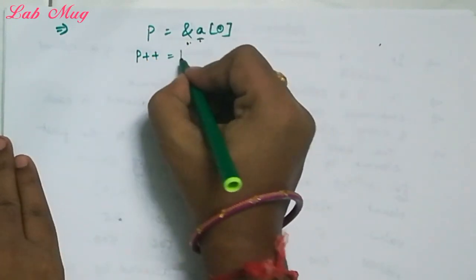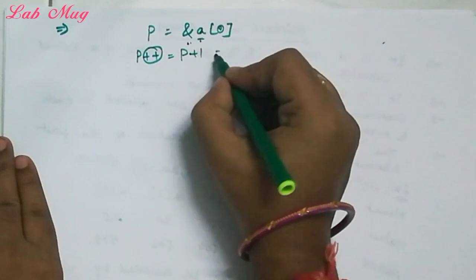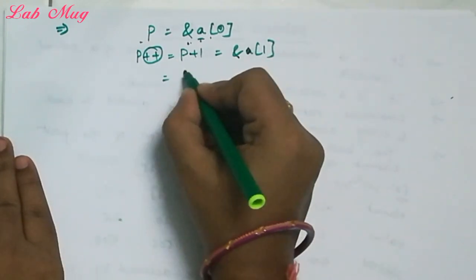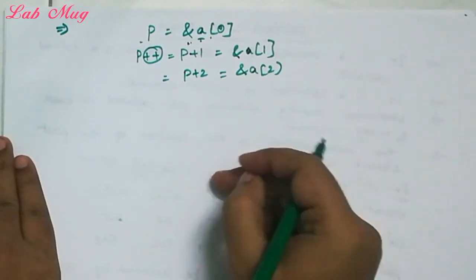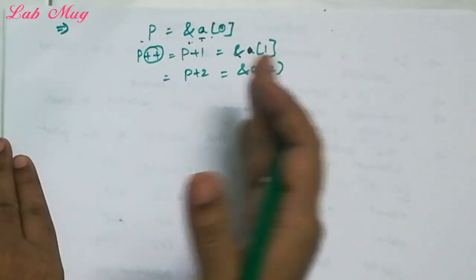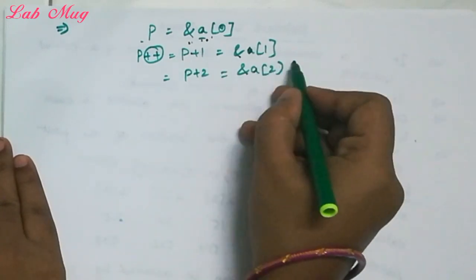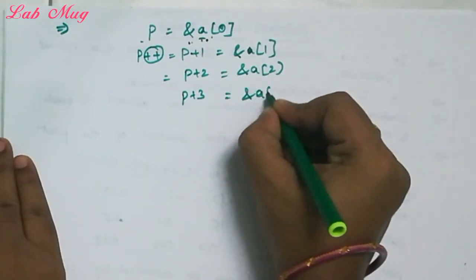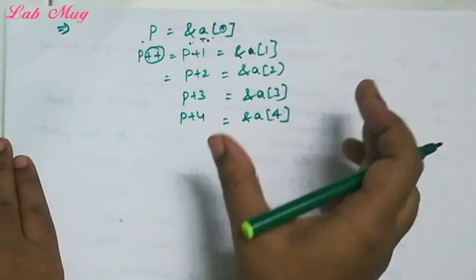For p++, that is p+1: p+1 means the address in p incremented by 1, which equals &a[1]. Again, p+2 equals &a[2]. So the relationship between p and a is: p = &a[0], p+1 = &a[1], p+2 = &a[2], p+3 = &a[3], p+4 = &a[4].